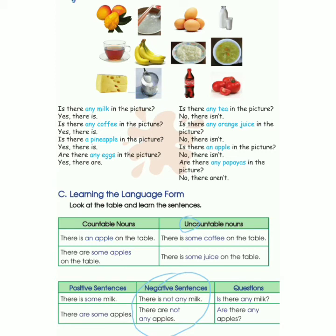Untuk bagian pertanyaan, questionnya: Is there any milk? Kenapa menggunakan 'is'? Karena uncountable — semuanya pakai is. There is, There is — pakai is semua. Kecuali yang countable, bisa pakai is untuk satu saja, dan are untuk yang banyak. Tapi khusus uncountable, semua menggunakan is — dalam bentuk positif, negatif, dan questions.